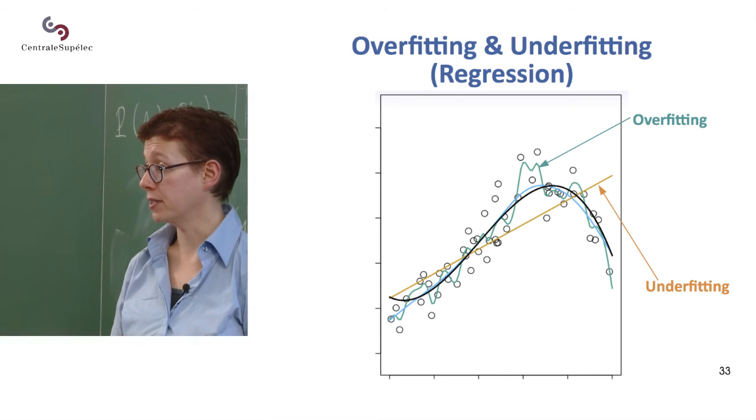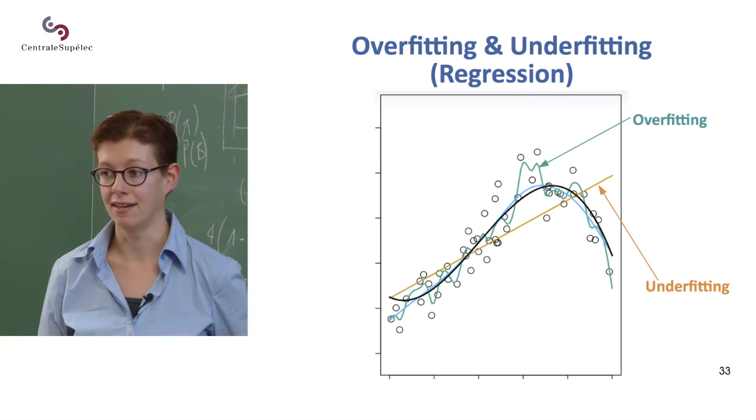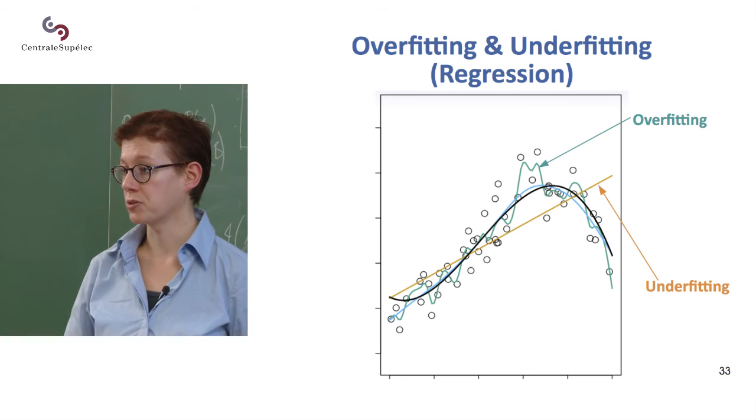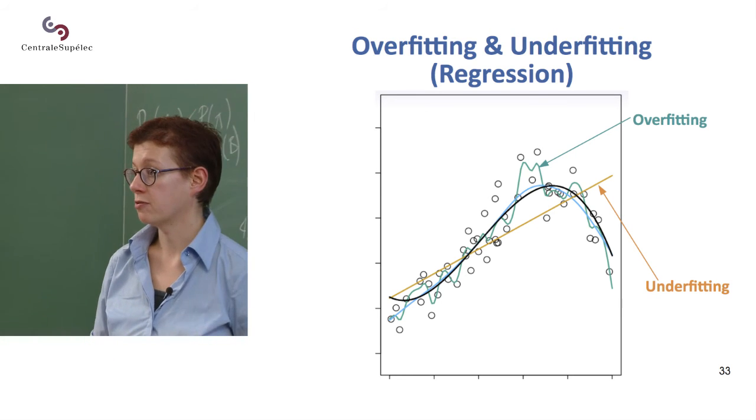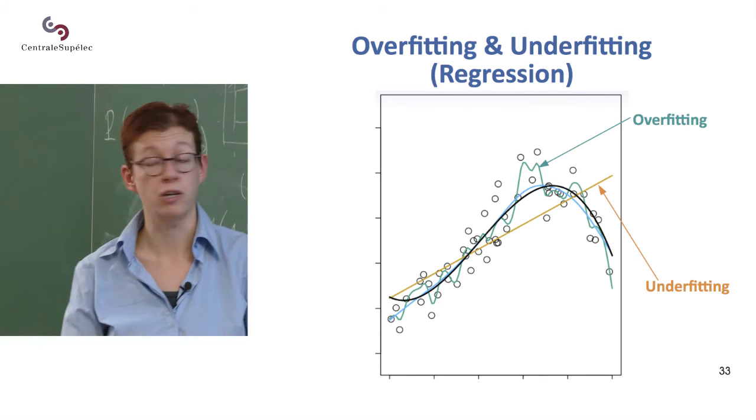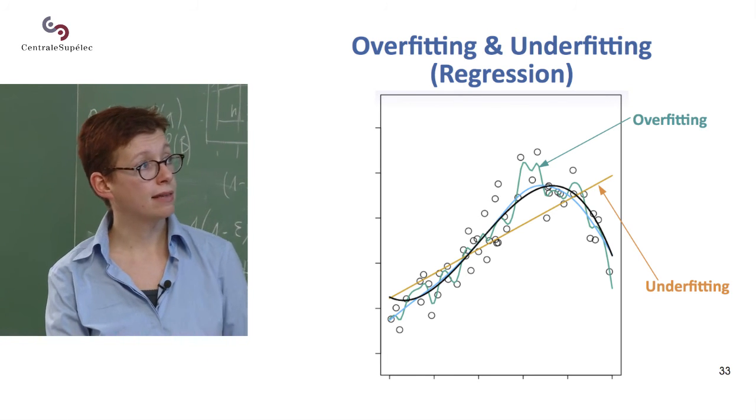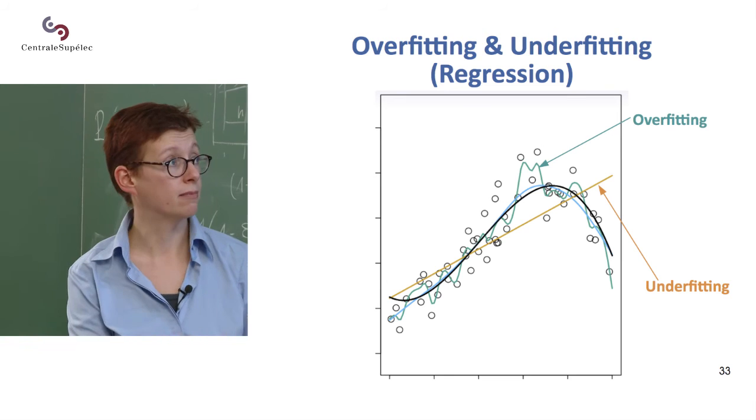Okay, so we still have this problem of under and over fitting. So now instead of wanting to separate blue points from orange points, I want to fit a line or curve to my points. And then here, so the black line is a real line and then there's been some measurement error.